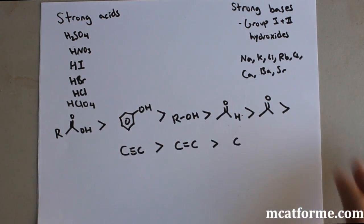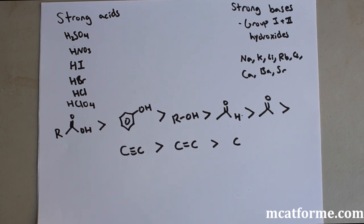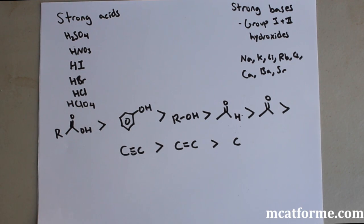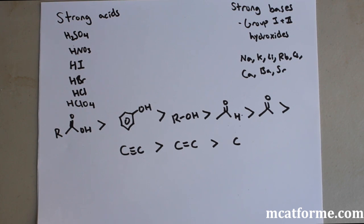In general, you'll need to memorize this basic acidity order for the MCAT: carboxylic acid is the most acidic, then phenol, then alcohol, aldehyde, ketone, alkyne, alkene, and finally a basic alkane is the least acidic. Those are the relative acidities of these functional groups. Knowing the pKa values for these molecules is also very helpful and will come in handy for future problems like extraction.